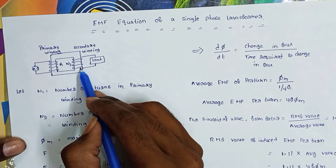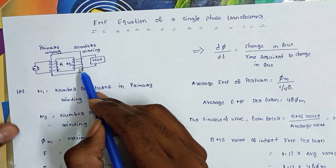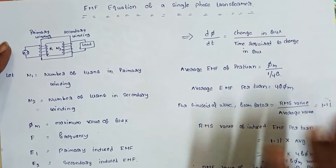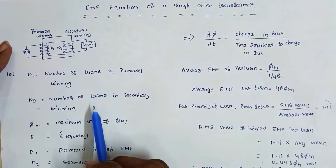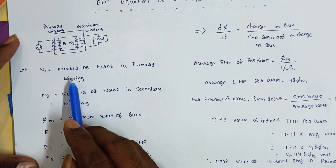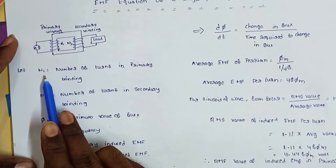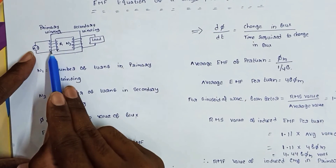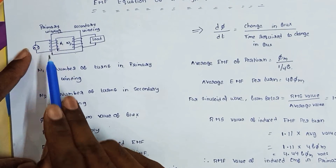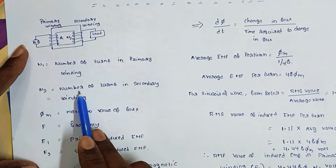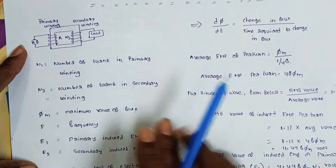In the secondary winding, E2 is the mutually induced EMF. This is the working principle of the transformer. Now we can see the EMF equation of the single phase transformer. First, N1 equals the number of turns in the primary winding, and N2 is the number of turns in the secondary winding.